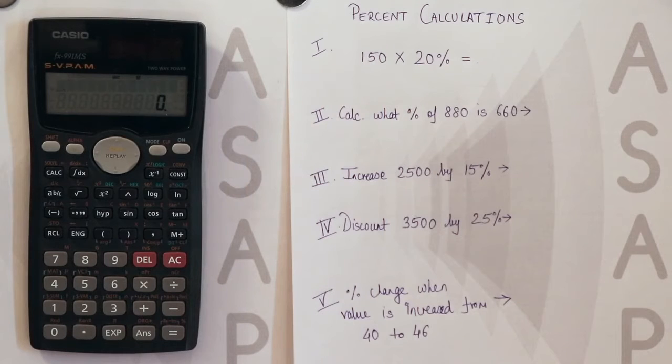Hello everyone, today's video is on percent calculations on Casio's 991MS calculator. The similar steps can also be followed for the following versions: 991MS, 570MS, 115MS, and 100MS.